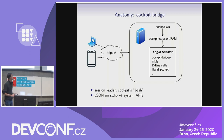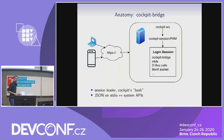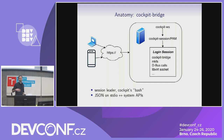Finally, what happens in the session: the first process, the session lead, is called cockpit-bridge. You can think of this as the moral equivalent of what bash is to an SSH session — it launches all the actions you actually want to do. On its top end, it talks the JSON protocol that the JavaScript drives, and on the other side it can open files, open D-Bus connections, pick up D-Bus signals, open sockets, and all the things needed to implement pages like the storage page.